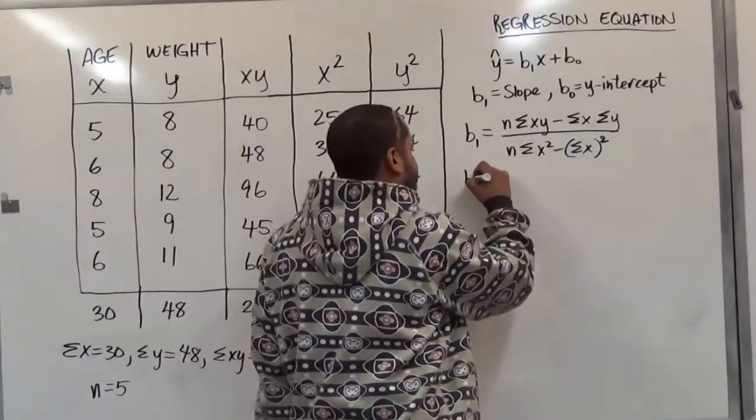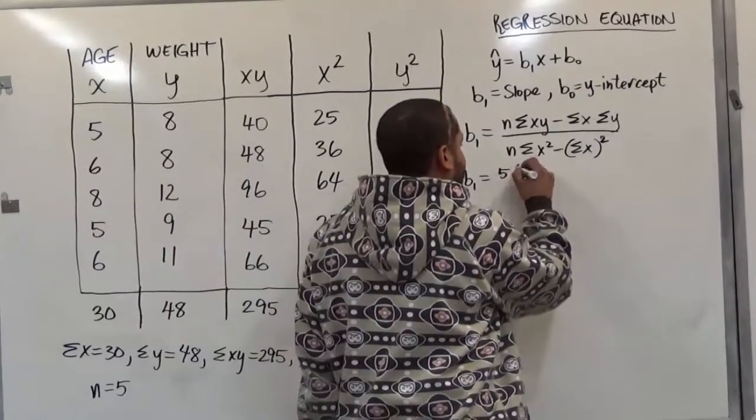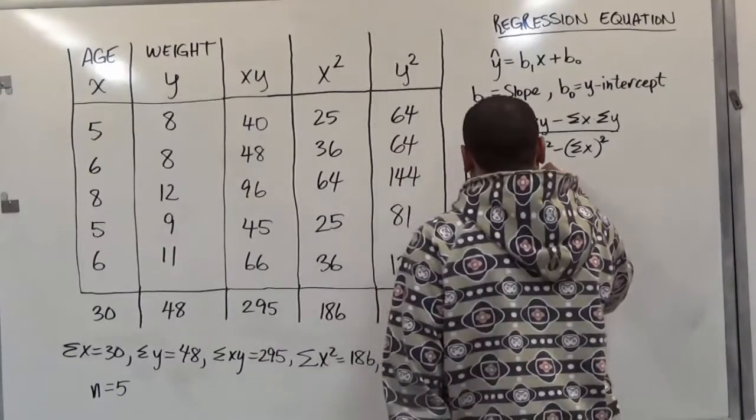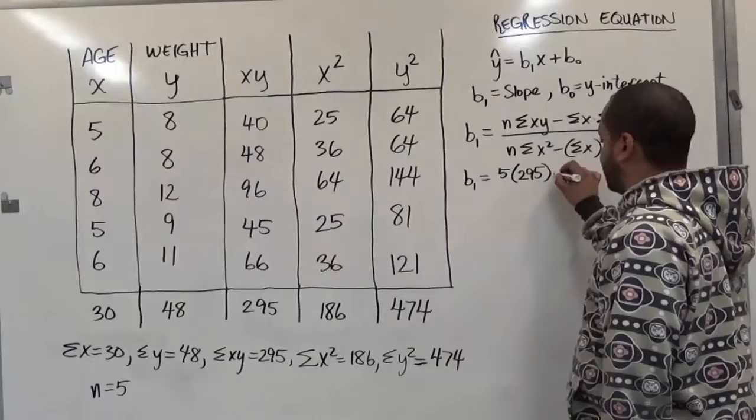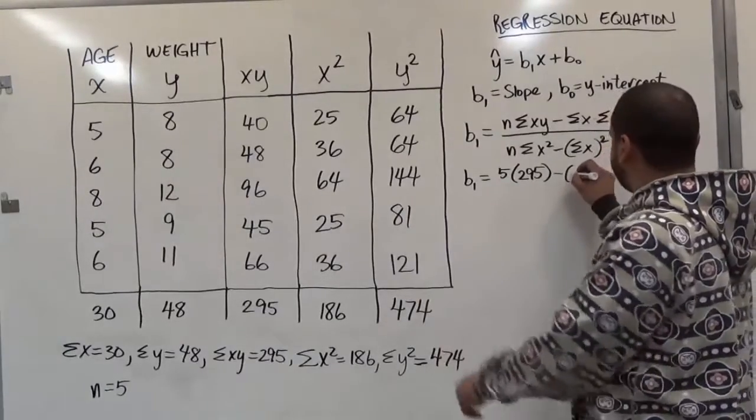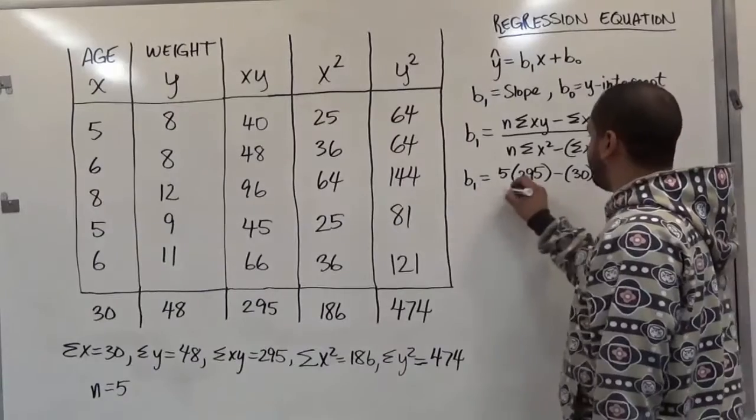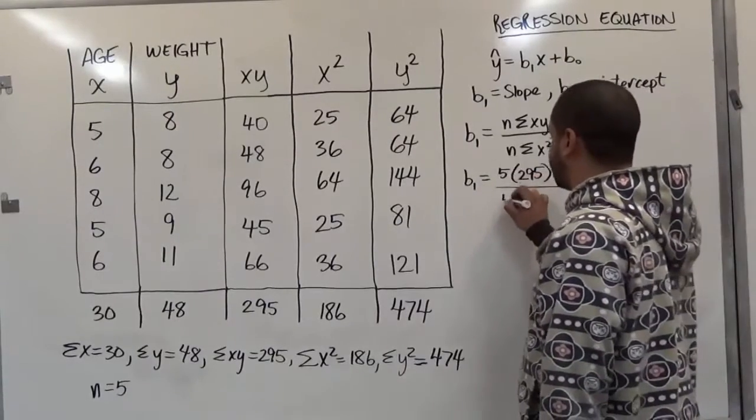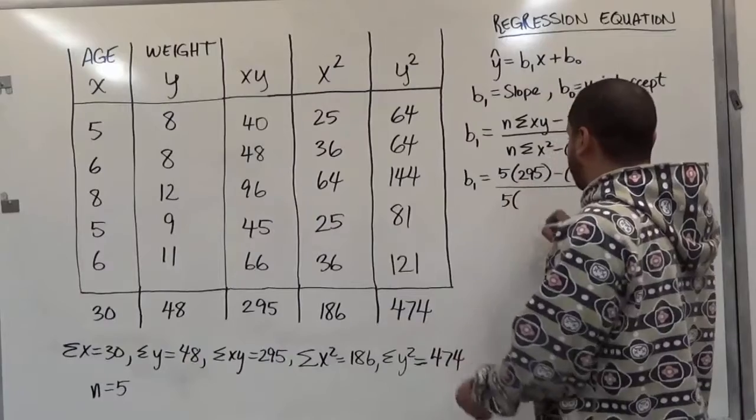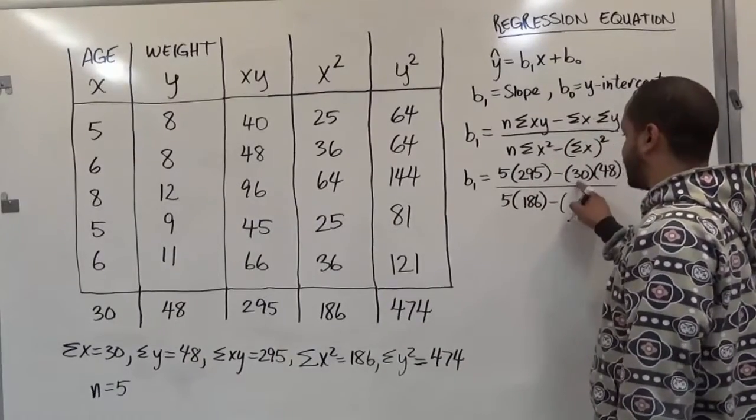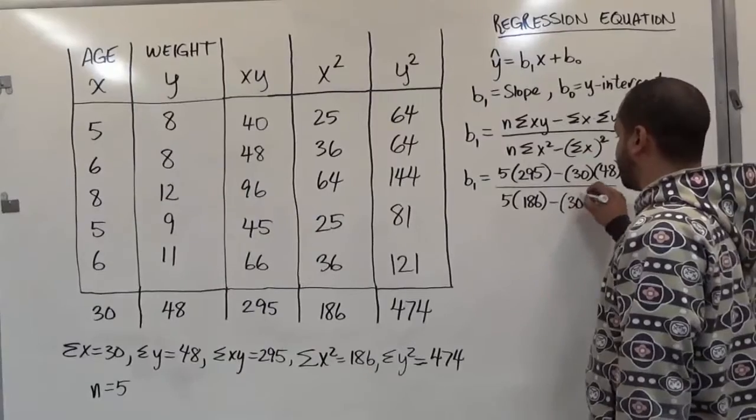So for the slope, b1 is equivalent to five times, now the sum of x, y is 295, we'll just write this in, and the sum of x is just 30, while the sum of y is just 48. All of this is going to be divided by n, which is 5, the sum of x squared, which is 186, subtracted by the sum of x again, which is 30, then squared.